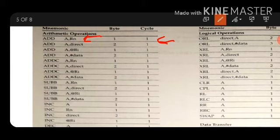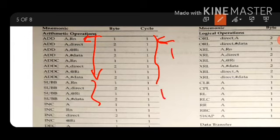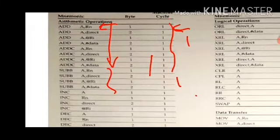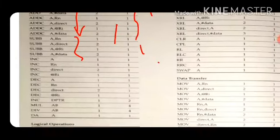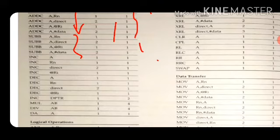Just observe it. Sometimes in the examination, if you are not given how many machine cycles for a particular instruction, all ADD instructions take one machine cycle. Similarly, the SUB instructions consume one machine cycle. You can remember that by default they consume one machine cycle. The byte is not required for our calculation.